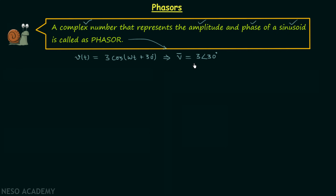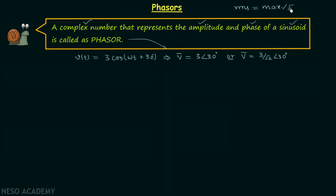Here you can notice that 3 is the maximum value of V(t), so this phasor corresponds to the maximum value. We can also have the phasor corresponding to the RMS value of V(t), which will be 3 over root 2, while the phase angle remains the same — because the RMS value equals the maximum value divided by root 2.